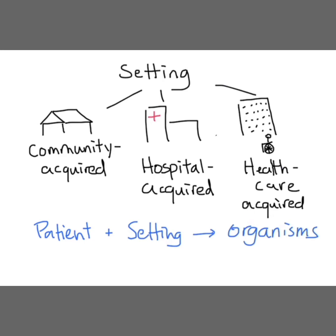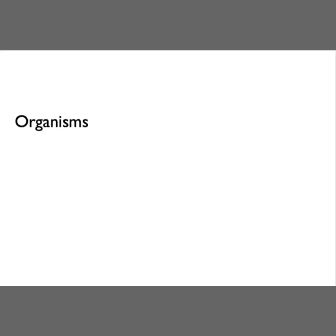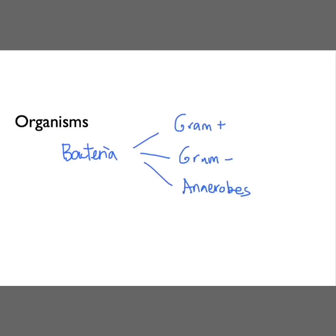Knowing both the patient and the setting will help us decipher which organisms are involved. The categories of organisms include bacteria — they can be gram-positive, gram-negative, or anaerobes — as well as virus and rarely fungal. We will focus our discussion on mostly bacterial and viral pneumonia.